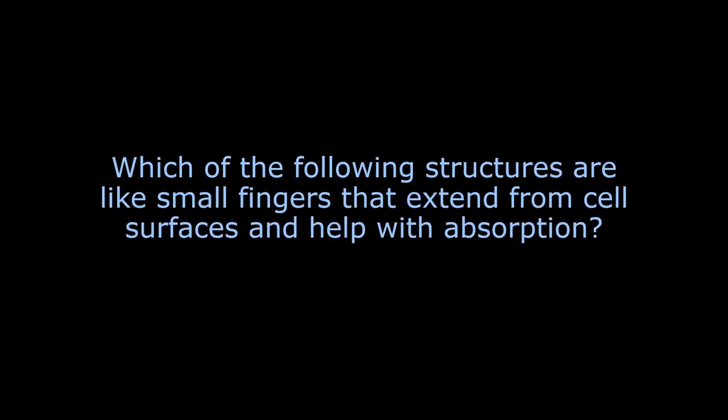Which of the following structures are like small fingers that extend from cell surfaces and help with absorption? No problem. We know if we have a cell surface and we see little fingers coming out, these are going to be either villi, or if they're teeny tiny, they could be microvilli, and that's what I'm looking for. Cilia? No, those are little hairs that move. Flagella is a movement thing you find on a sperm cell. Villi? There it is. And otoliths? No, those are things found in the ear. Let's go with villi.